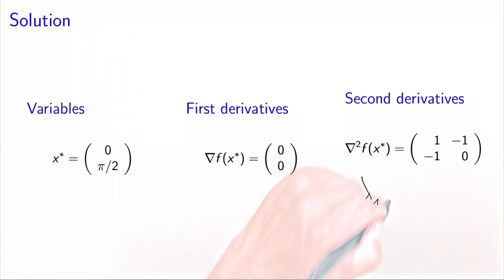The first eigenvalue, lambda 1, is equal to minus 0.62. And the second eigenvalue, lambda 2, is equal to 1.62. So it means that this matrix is not positive definite. Actually, the interpretation of these values is that in some directions, the function is convex. It's when the eigenvalue is positive. But in some other directions, the function is concave. This is when the eigenvalue is negative. And actually, we can look at it on the picture.